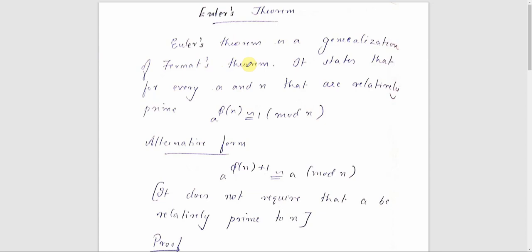We have the generalized version, Euler's theorem, which states that for every a and n that are coprime, a raised to φ(n) is congruent to 1 mod n. The two numbers a and n are considered to be coprime, meaning their greatest common divisor is 1.